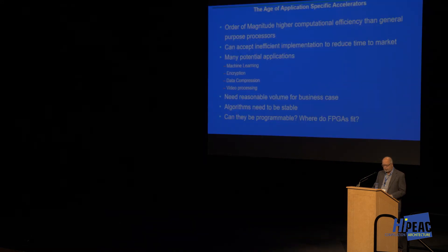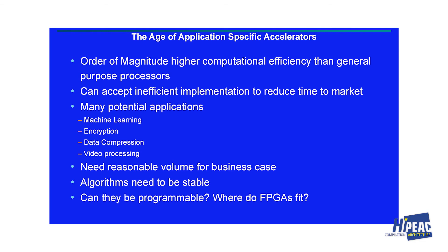Over time you'll see accelerators integrated into the same silicon as the general-purpose CPU. Why are application-specific accelerators important? In theory you can get an order of magnitude higher efficiency than general-purpose computers. The challenge is they do a great job on what they're designed for, but can't do anything else — so the question is how do you decide what to put in and how to implement it.